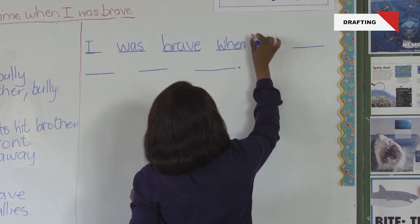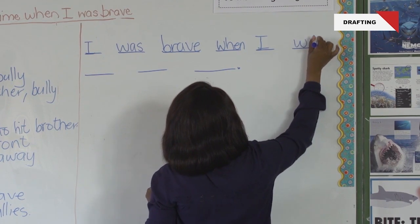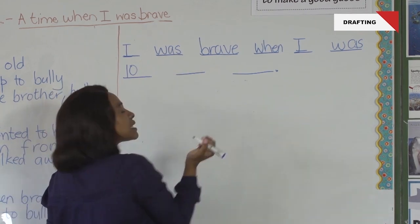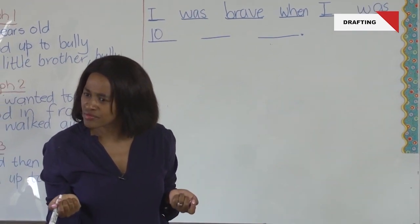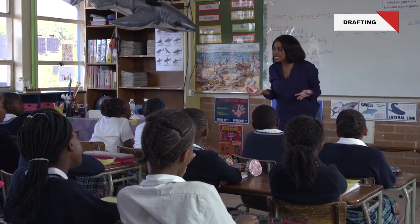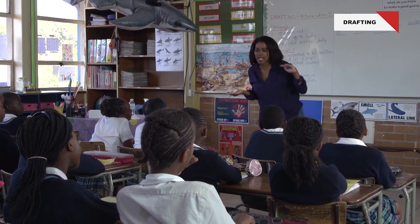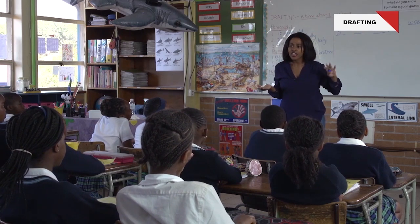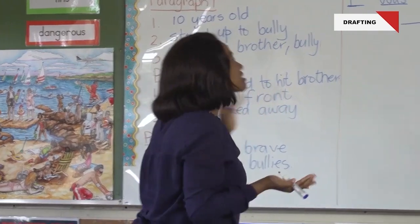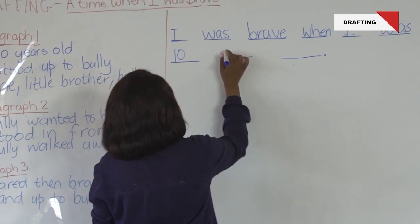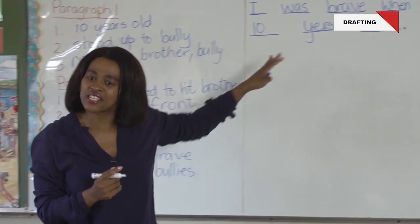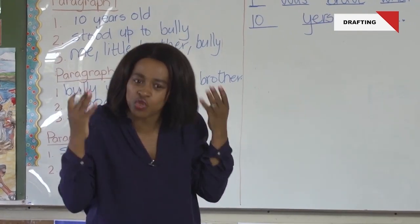When I was 10 — there's 10. Let's say I cannot spell 'years.' What do we do when we cannot spell a word? We say it slowly, we hear the sounds, and we write the sounds that we hear. 'Years' — yeah, yes. Let's say you write it as 'yeas' — it's fine, because this is the first draft. You are allowed to write what you can hear.